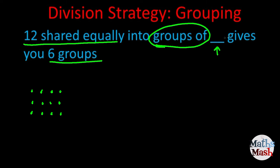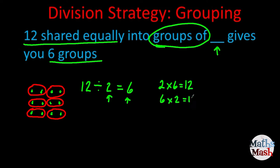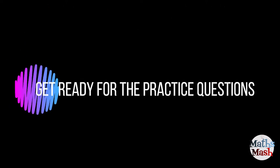12 shared equally into groups of — we don't know yet — gives you six groups. I've got 12; I'm going to put them into six groups. I've got my dividend divided by an unknown divisor, giving me a quotient of six. I can see that I've got two in each group. I multiply two by six — that should give me 12. Yes, 12. So there's two in each group, which means my divisor is two.